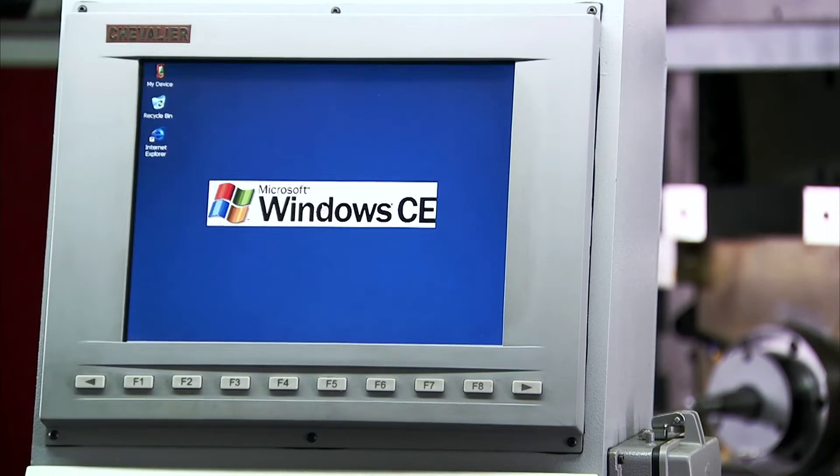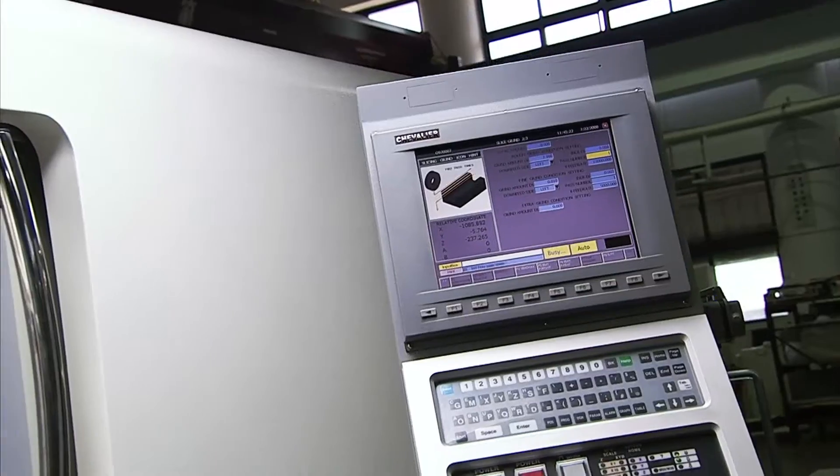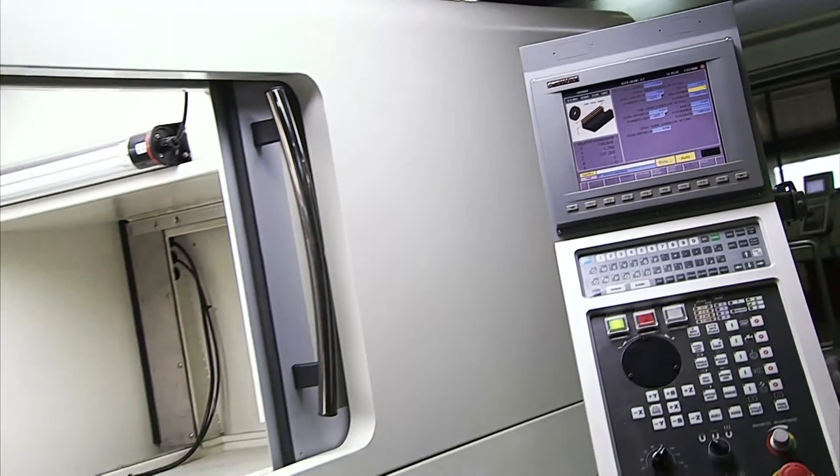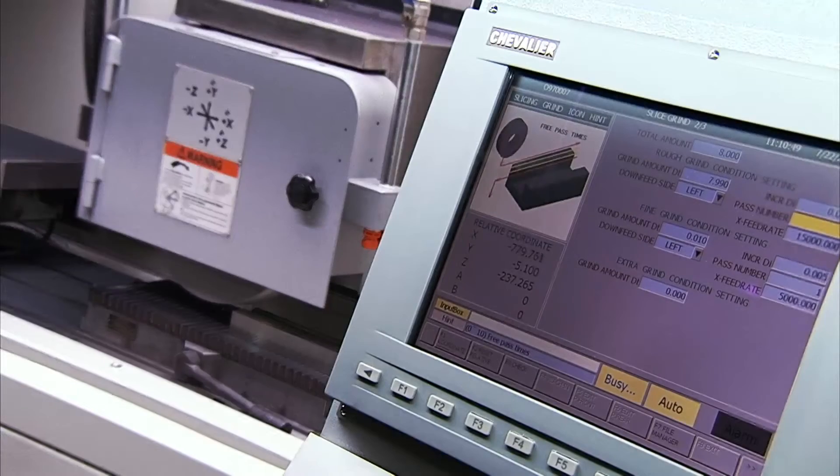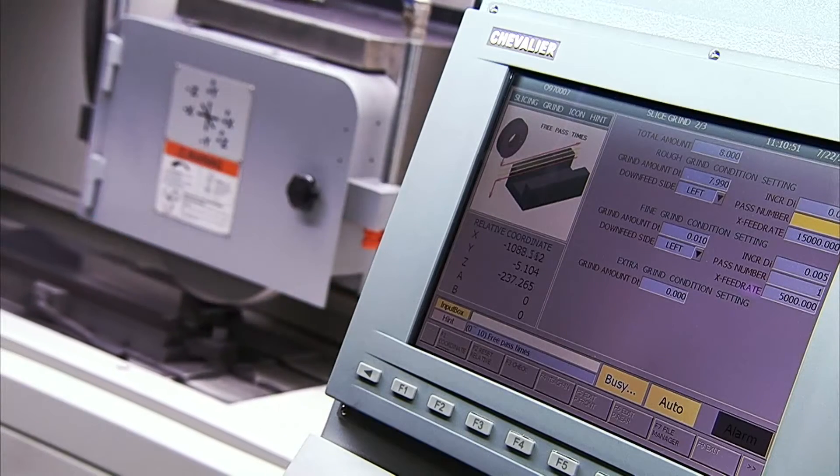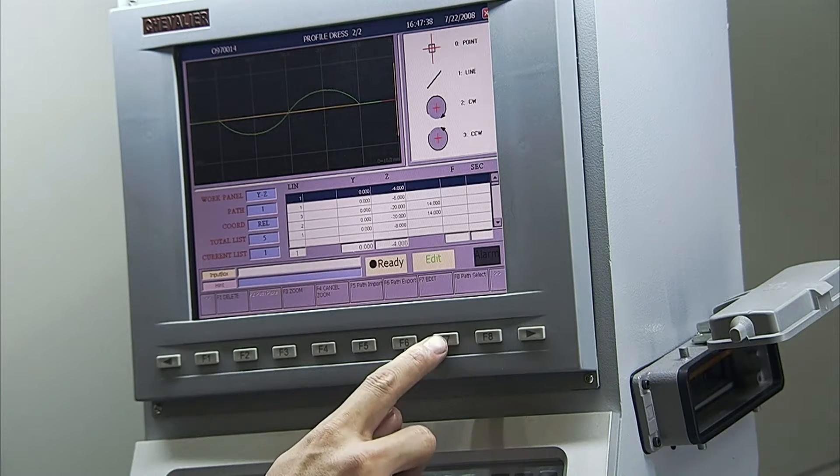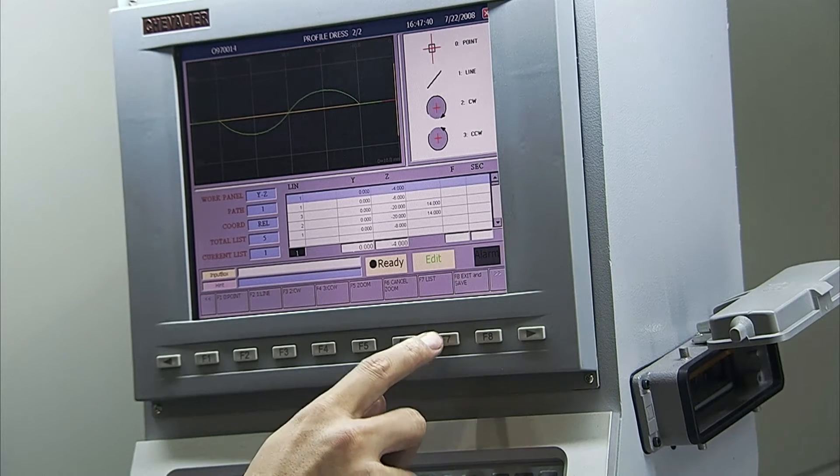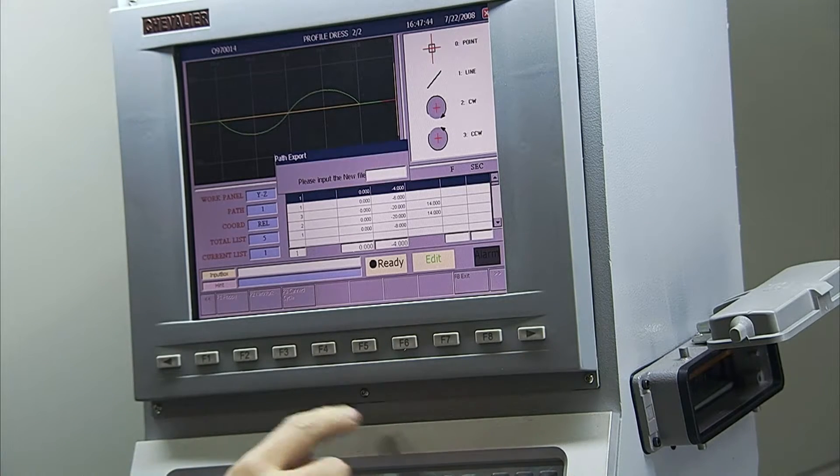The smart series controller runs on a Windows platform and Chevalier's own design conversational interface which provides an amazing range of the most advanced functions you could wish for in a grinder. Getting started with the smart is easy and the system allows easy porting of FANUC M and G-code programs or even CAD files through the USB or floppy port and the unique conversational interface.